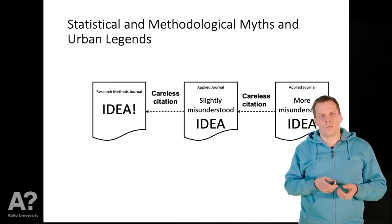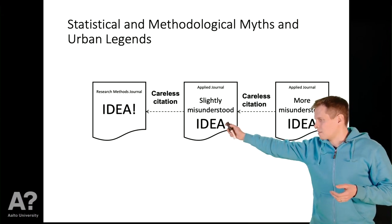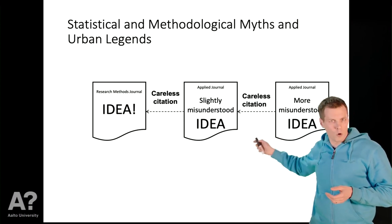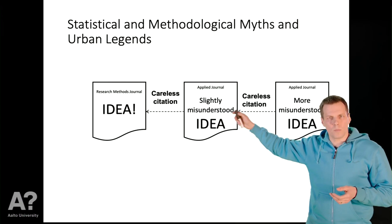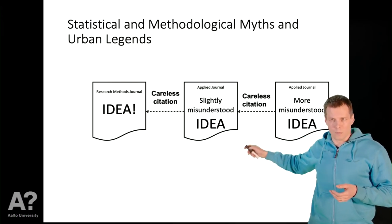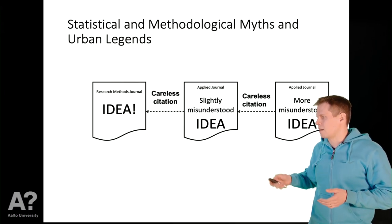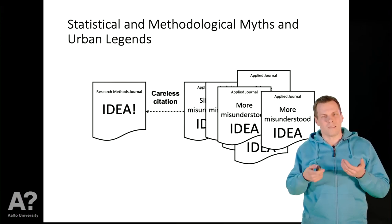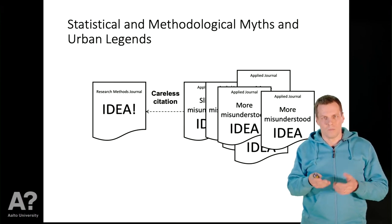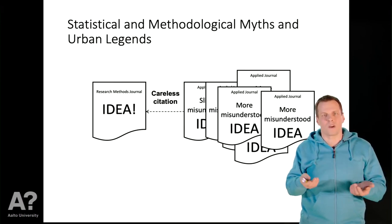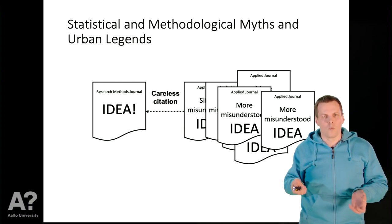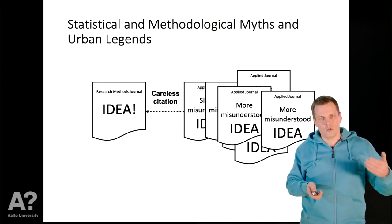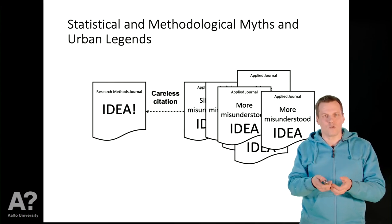What's more problematic then is that when we have these two articles here that cite the misunderstood idea, then people in this discipline think that they have their own body of knowledge about the technique and all the other people who want to publish, or most of them who want to publish in this journal, cite these two papers as evidence for this is how the technique is supposed to work. Then the careless citation and the more misunderstood idea becomes institutionalized in the research practice so that no one even questions it. Once we have 10 papers that apply a technique incorrectly or repeat a claim that is not true, then everyone thinks that that claim is true because it has been repeated many times.